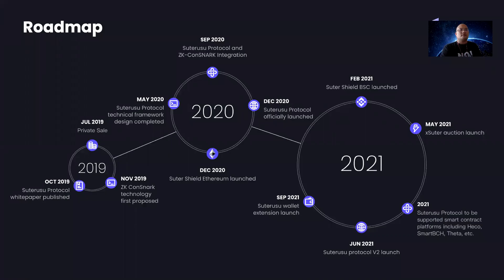We launched our project around two to three years ago and are about to celebrate our two-year anniversary. As we can see on this roadmap, we have achieved a lot. For instance, we have already integrated our original zero-knowledge proof scheme with our main product, Sudashore. We also deployed Sudashore over multiple smart contract platforms such as Ethereum and BSC. We have recently launched the new XSudo token, which aims to be a revenue sharing token. We also recently launched Sudashore version 2.0.